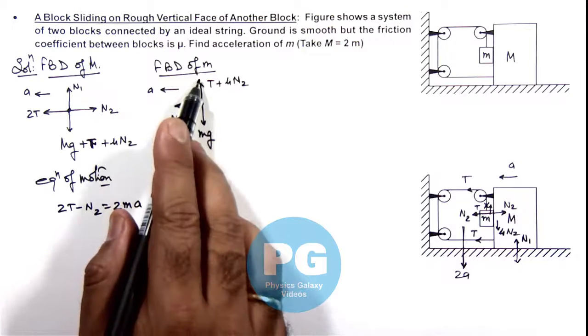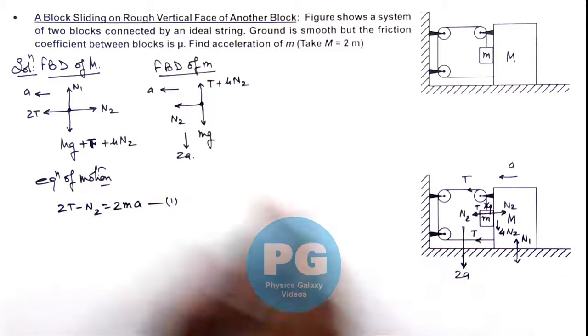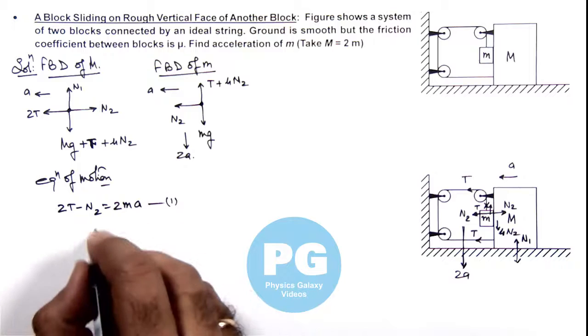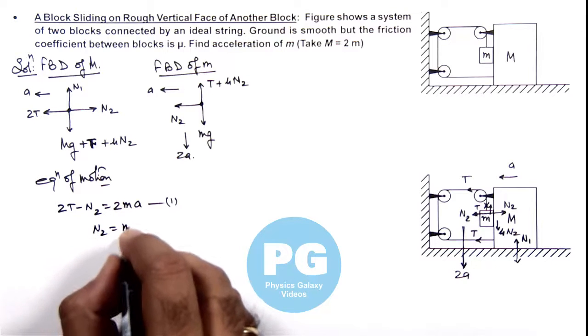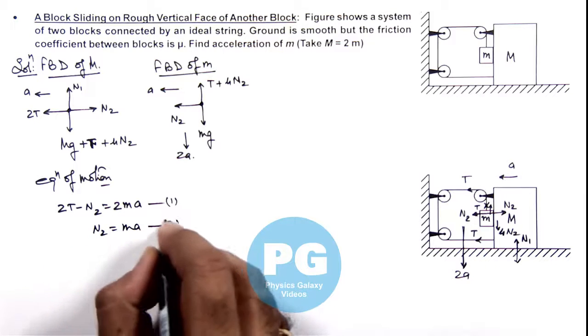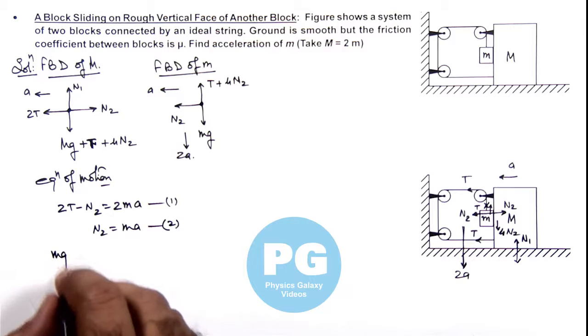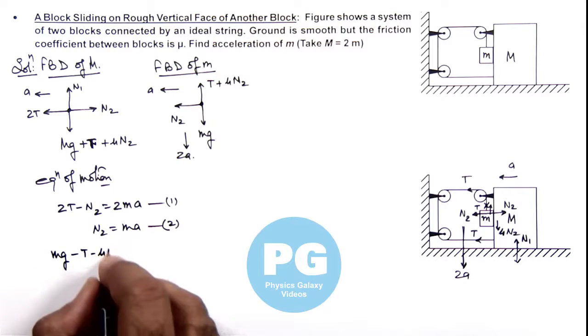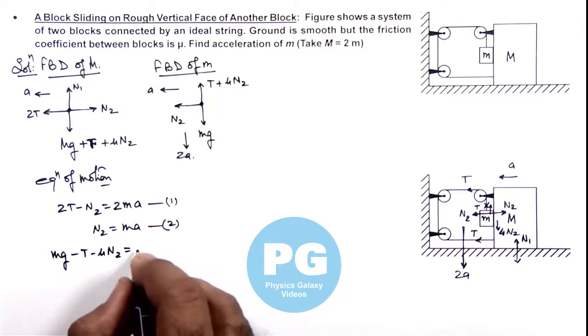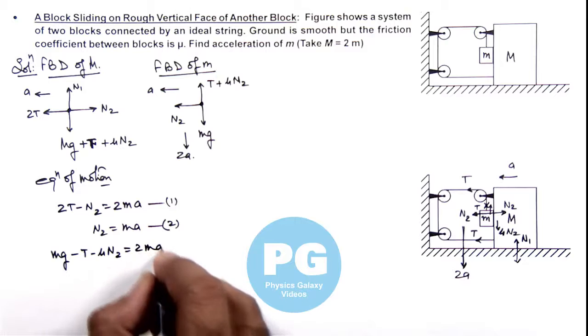For block of mass small m, here equation we can write as N2 is equal to m ay, this is our equation 2. And in vertical direction it is mg minus T minus mu N2 is equal to 2m ay. This is our equation 3.